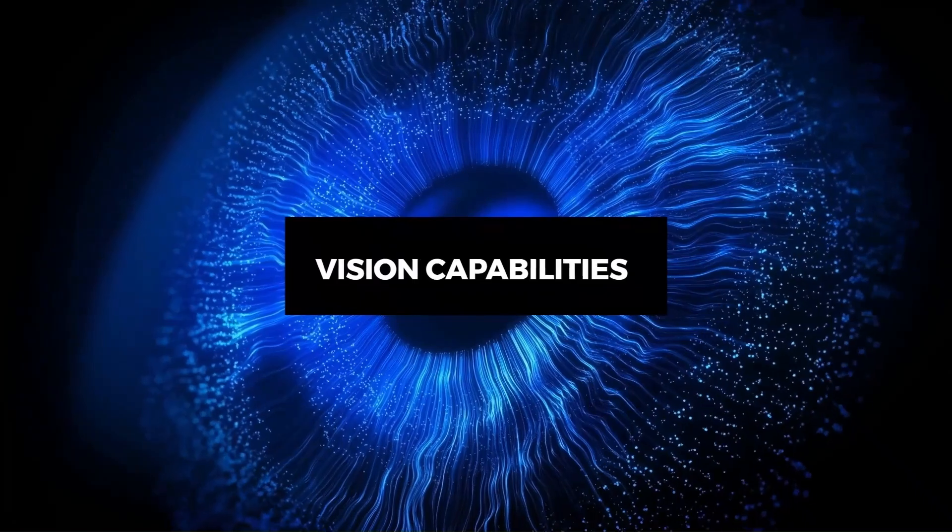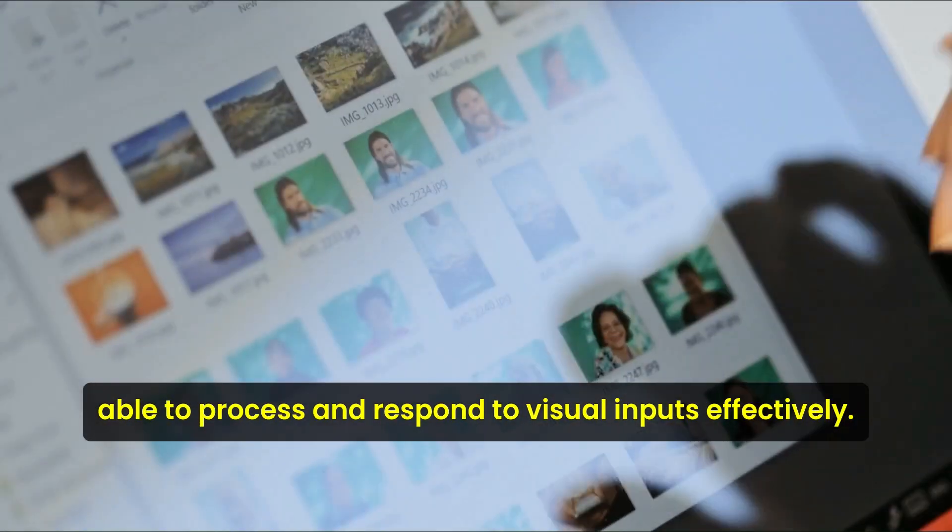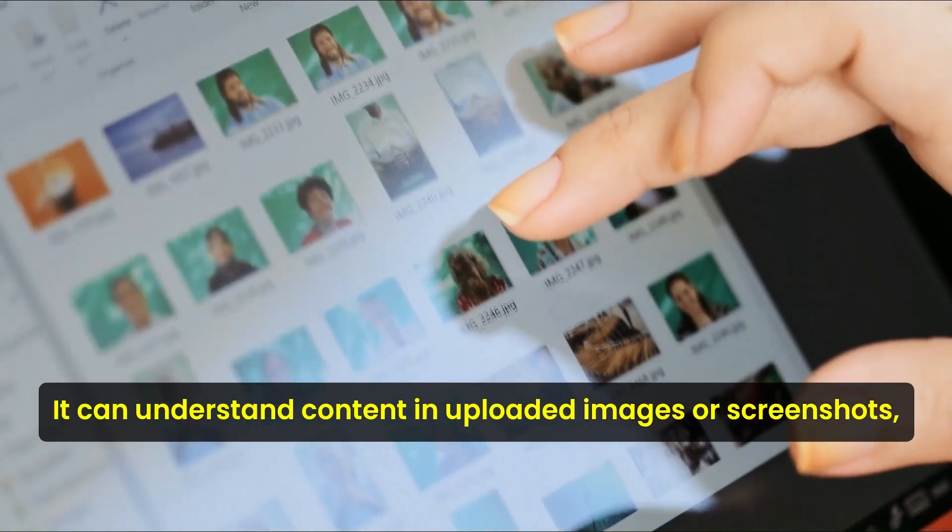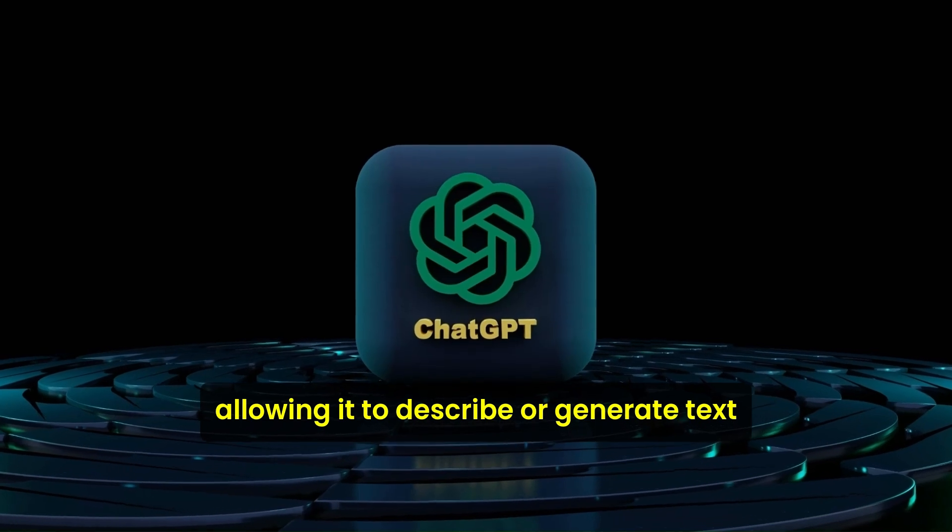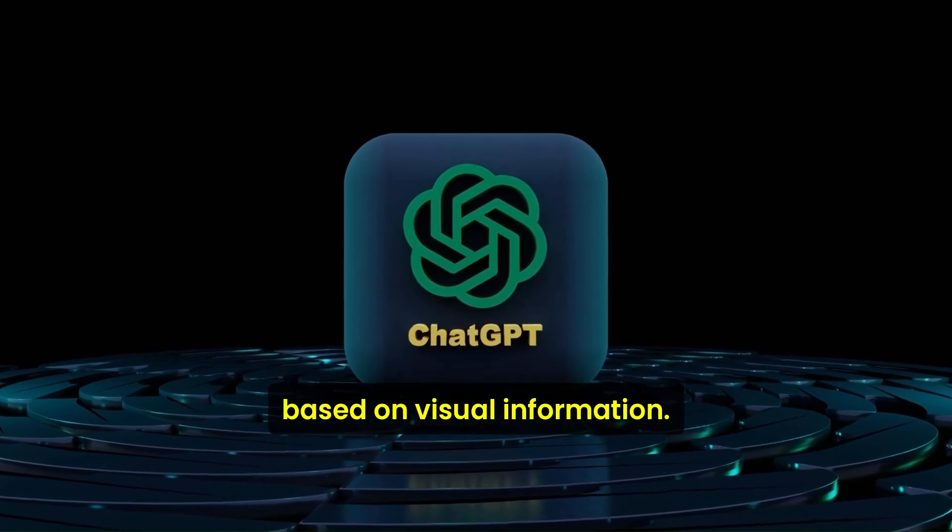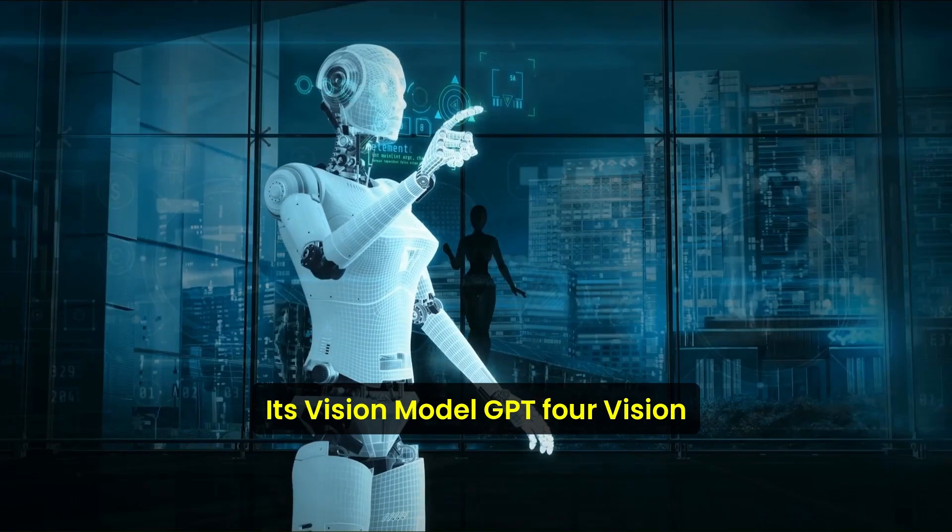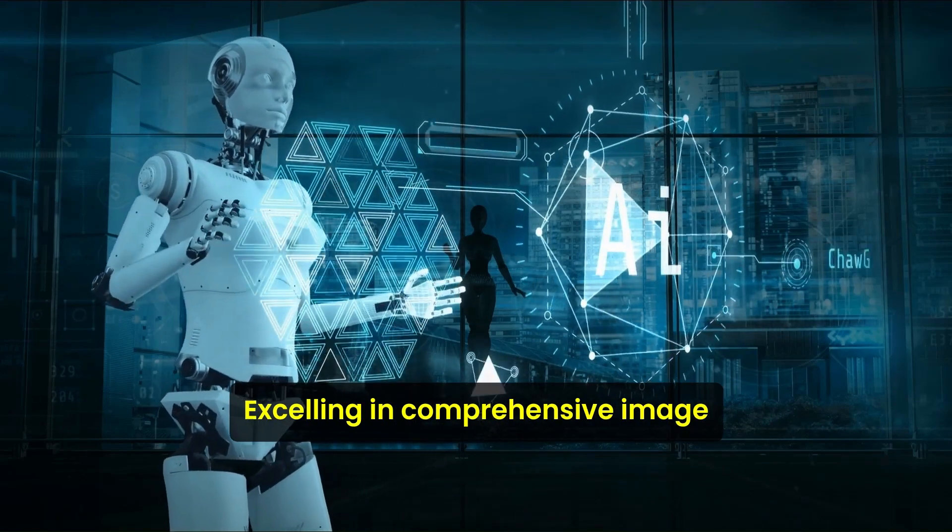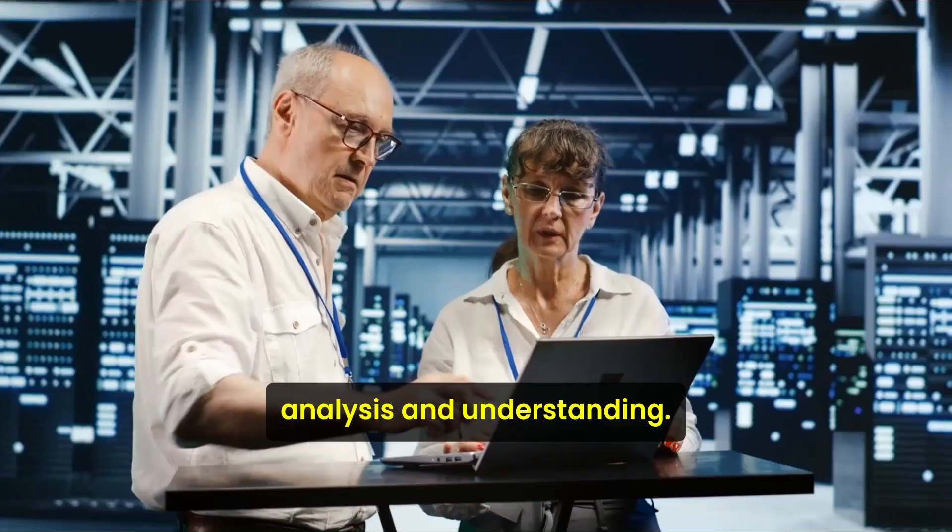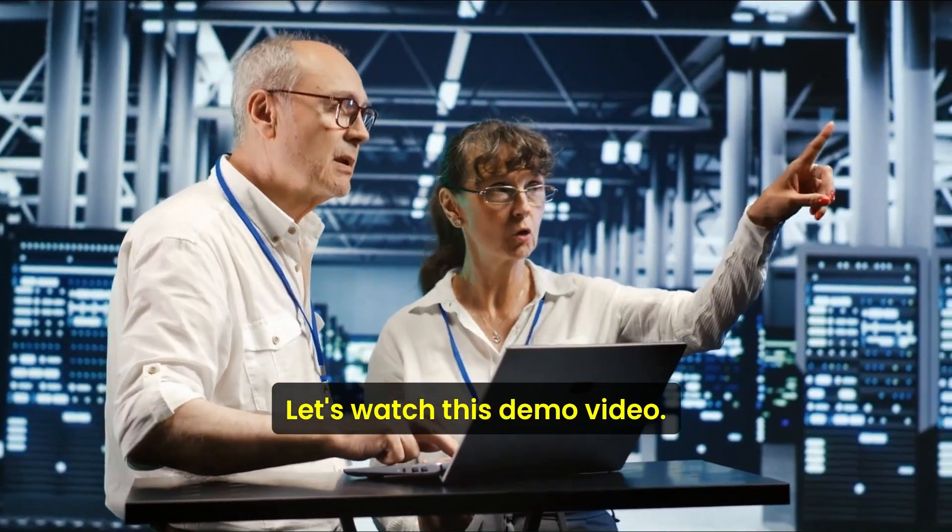Number six, vision capabilities. GPT-4.0 has impressive vision capabilities, able to process and respond to visual inputs effectively. It can understand content in uploaded images or screenshots, allowing it to describe or generate text based on visual information. Its vision model, GPT-4 Vision, accurately identifies objects and performs tasks like object counting, excelling in comprehensive image analysis and understanding. Let's watch this demo video.